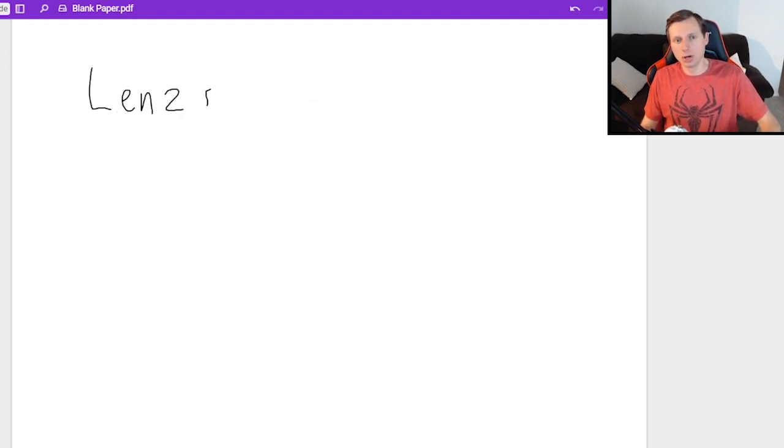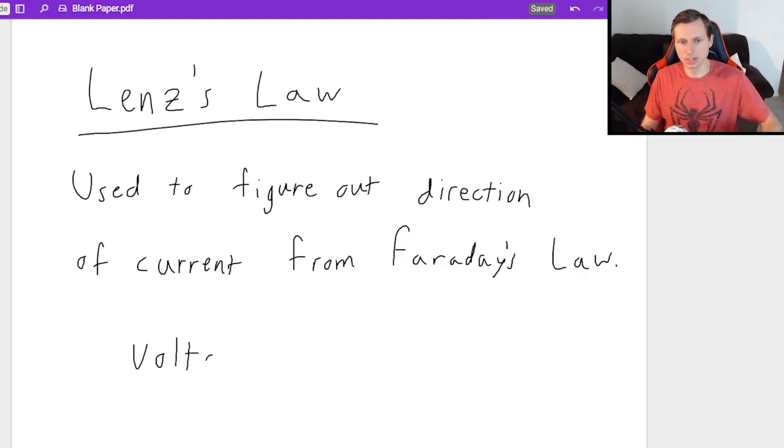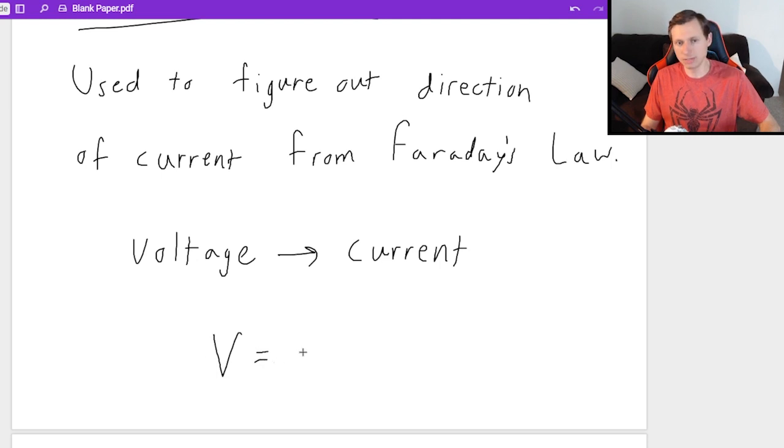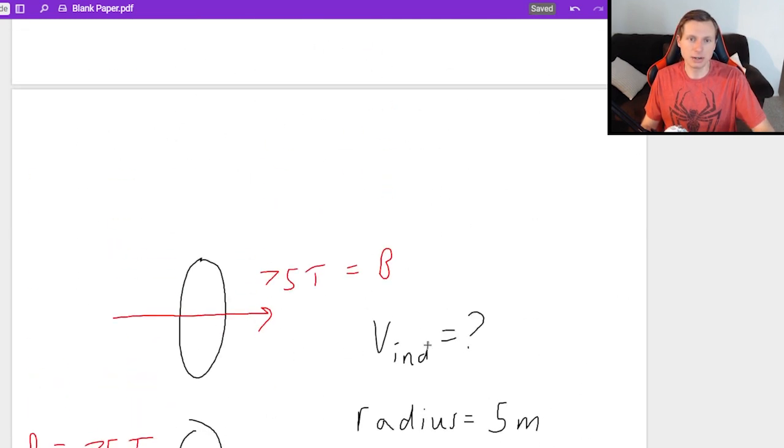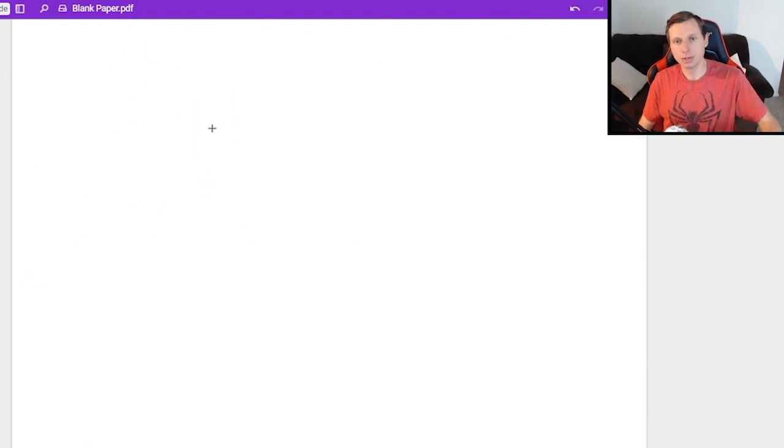And now we use Lenz's law to figure out the direction of the current from Faraday's law. But wait a minute, I thought Faraday's law was voltage. Yeah, that's true. But remember that a voltage creates a current. And that's because of Ohm's law, which says V equals I times R. So basically what I'm saying here is that in this scenario, a voltage was generated. And because there's a voltage, it's actually going to create a current in the loop. Now whether that current flows clockwise or counterclockwise in this example, or any example for that matter, that's why we use Lenz's law and the right hand rule to figure it out.